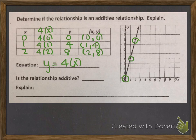So because the rule is 4x or 4 times x, our equation is y equals 4x. So what I want you to do is answer these questions. Is the relationship additive? Yes or no. And then explain why or why not. Please do this on your own. Take a moment to pause the video to do this. And then we will move on to the next problem.